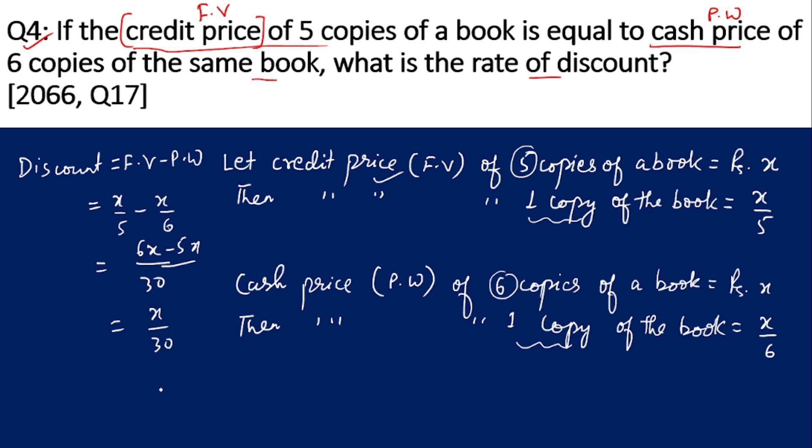Now we need to find the rate of discount. The rate of discount formula is discount divided by FV times 100. The discount value is X/30, and FV value is X/5, multiplied by 100. X cancels out. When we divide by a fraction, we take the reciprocal. So it becomes 5/30 times 100. 5 times 30 gives 6 in the denominator. After canceling, we get 50/3, which is 16 and 2/3 percent.